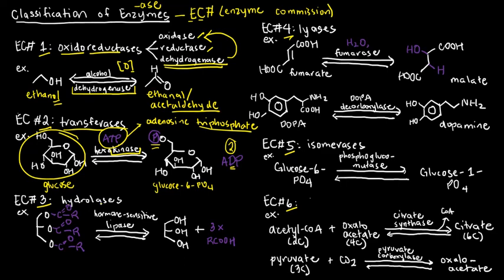Next, EC number three is the family of hydrolases. And as the name implies, the main reaction performed here is hydrolysis. Usually, the types of functional groups that are hydrolyzed are, but not limited to, esters and amides.